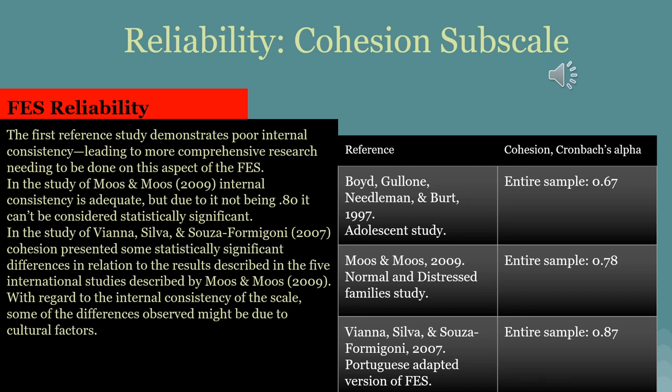With respect to test-retest reliability, the FES shows excellent results — intraclass correlation is equal to 0.86 in the Moos and Moos study. We can assume that the FES is fairly stable with those results, but with regard to the internal consistency of this scale as a whole, some differences observed may be due to cultural factors or other outliers. The FES seems to demonstrate adequate reliability, but further research should be conducted to confirm the level of reliability it holds and whether it is stable enough to be fully confirmed.